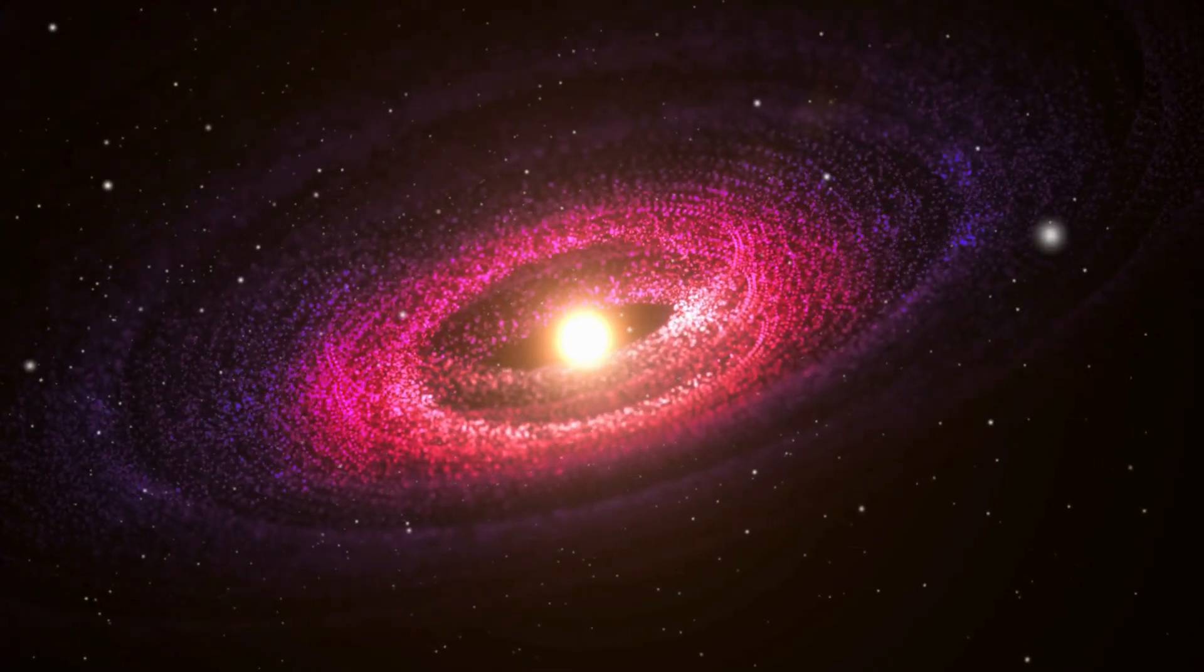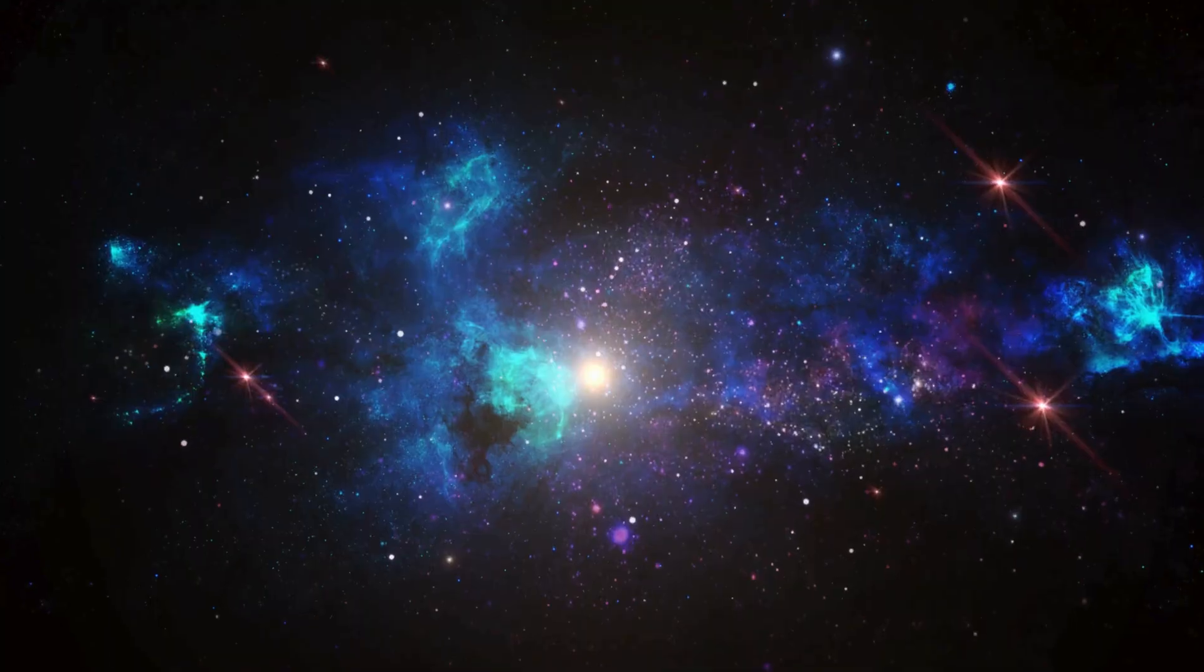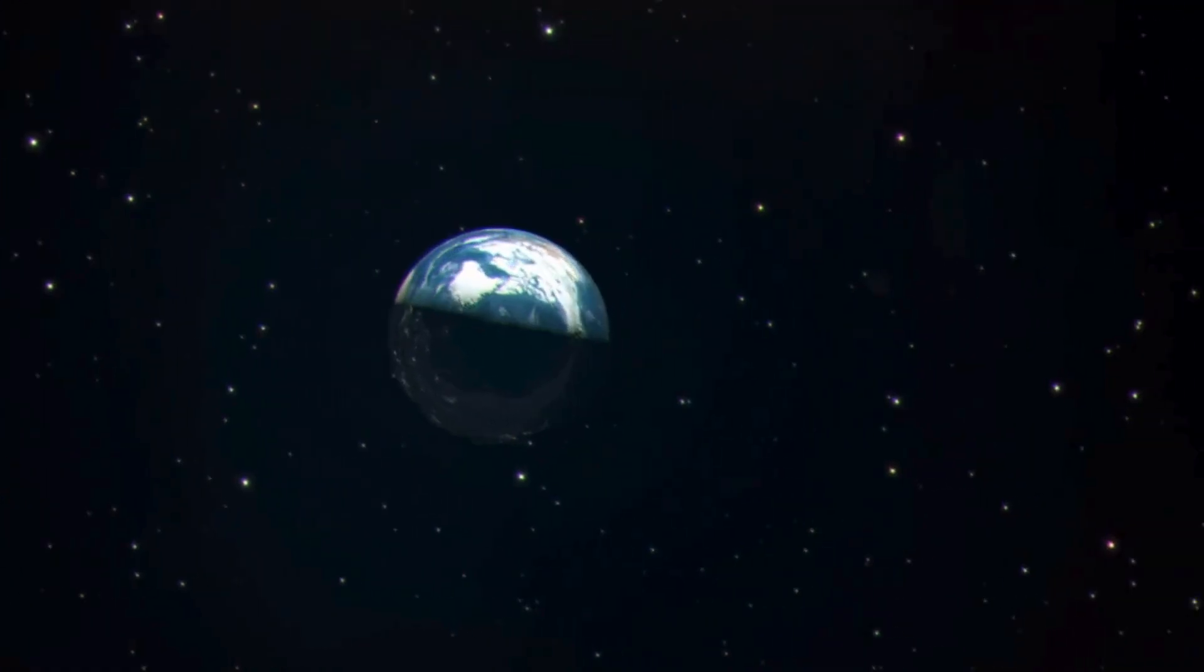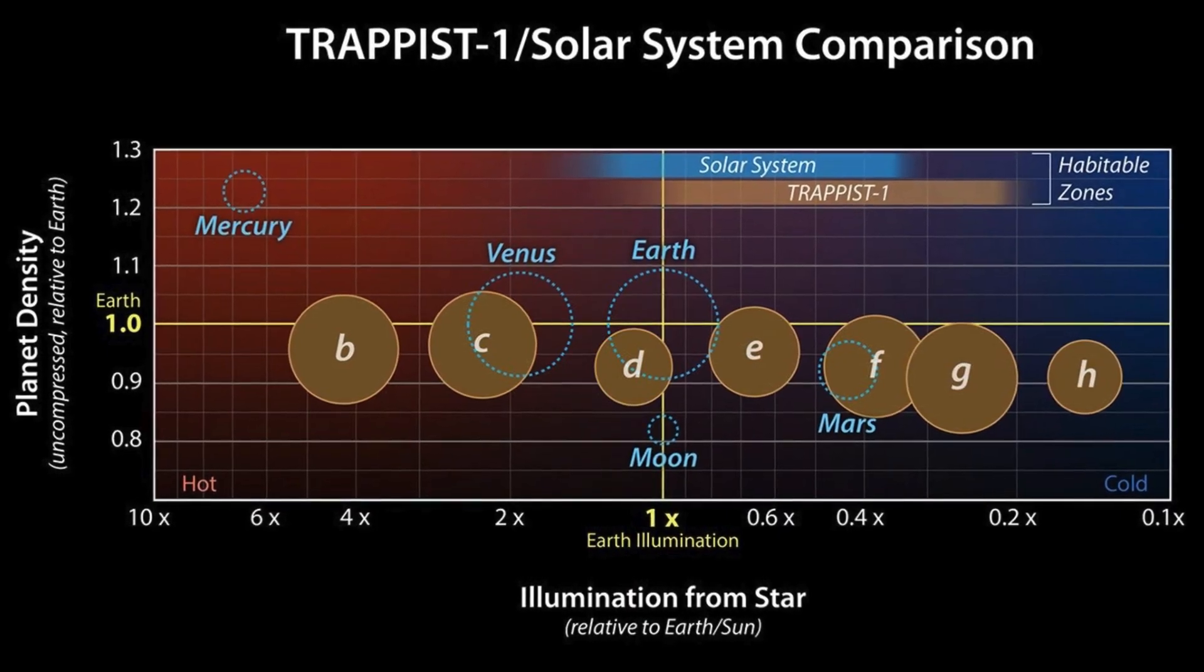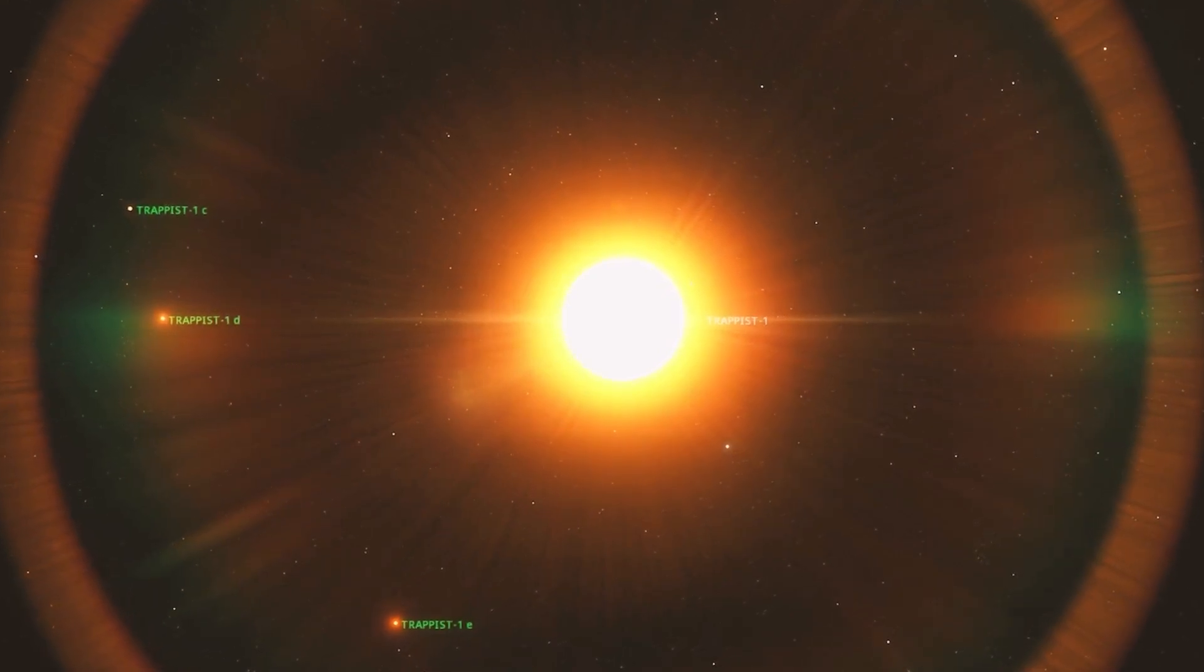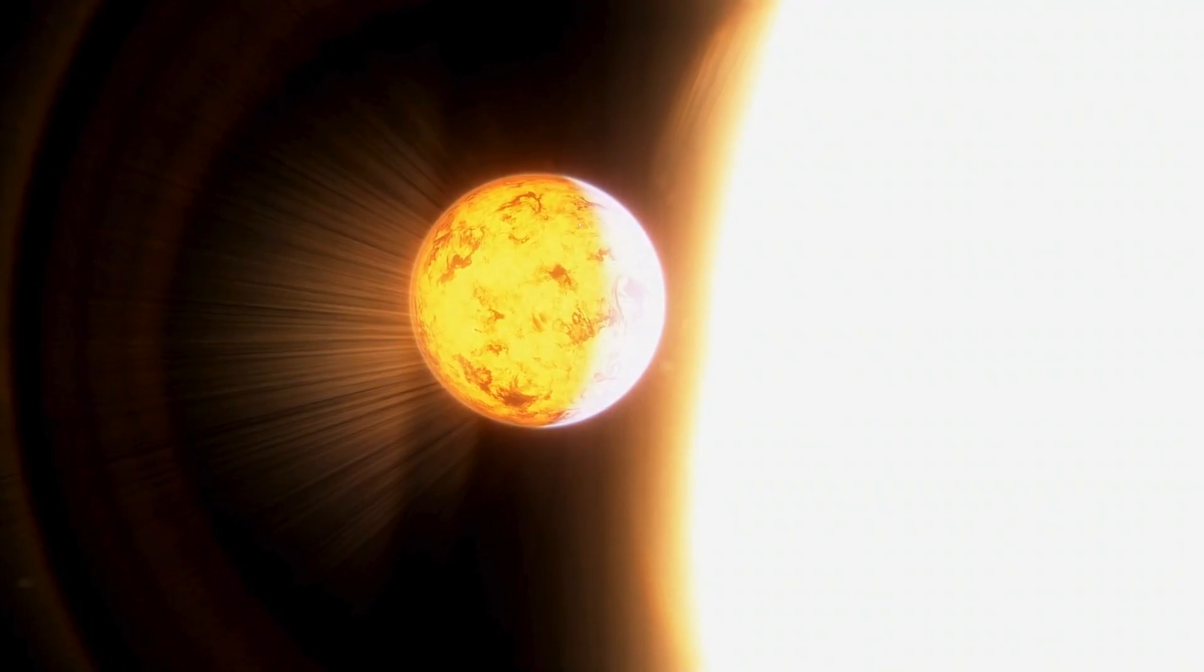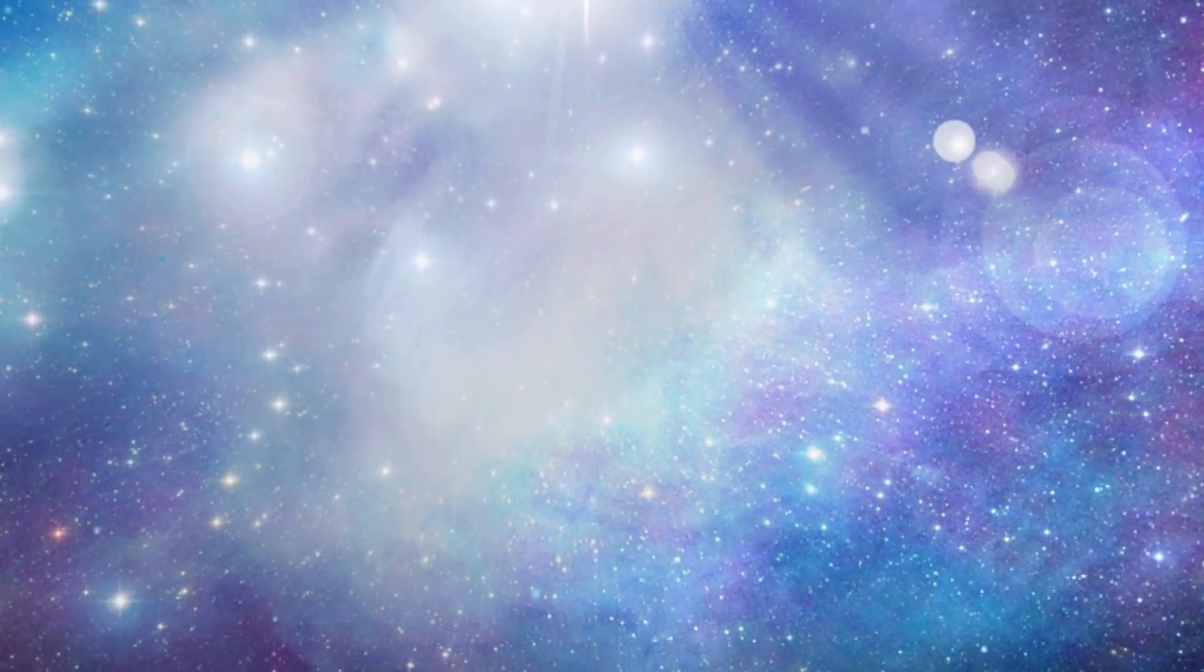But with such a small dim star at the center, is there really any hope they could be habitable? For any of these planets to receive enough light to support life, their orbits need to be much closer than Earth's to the Sun. In the TRAPPIST-1 system, the planets certainly are. All seven are incredibly close. TRAPPIST-1e orbits at only one-thirteenth of Mercury's distance, which means it could be tidally locked to its host star.